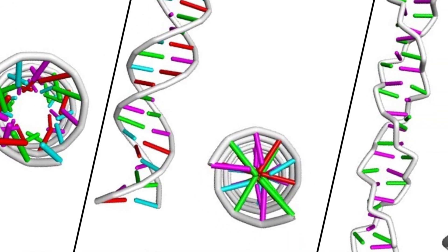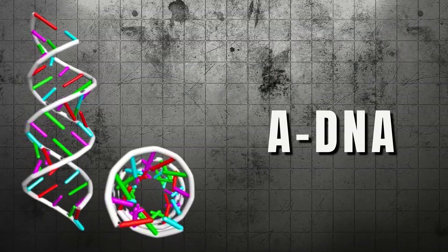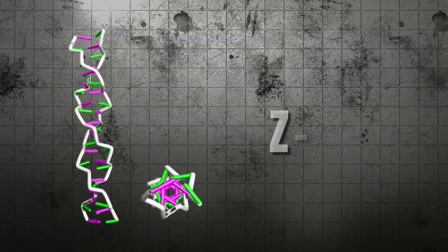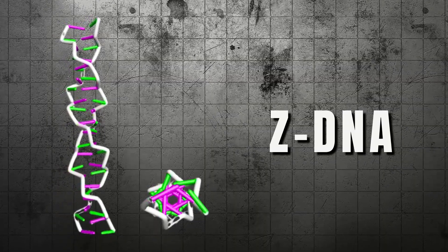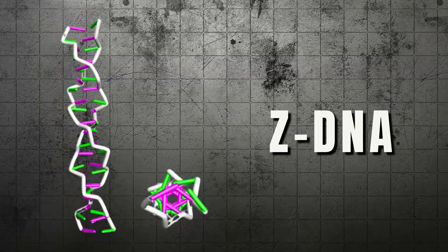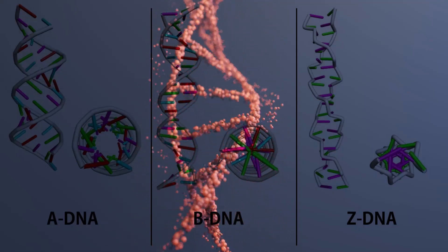But DNA does not always follow the rules. In dry conditions, it shrinks into A-DNA, short and wide. In certain sequences, it flips into Z-DNA, a left-handed spiral that shocked scientists when first discovered. These unusual shapes can control how genes are switched on or off.